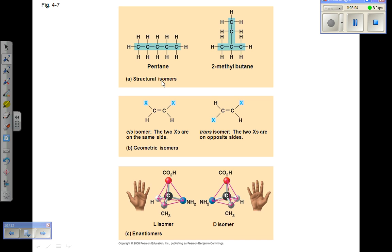Structural isomers differ in the covalent arrangements of their atoms and the location of double bonds.